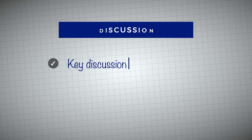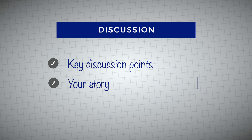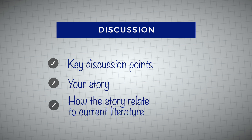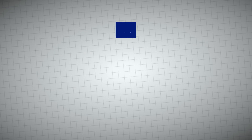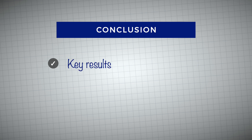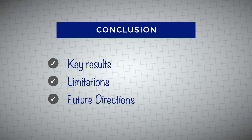For your discussion, write down the key points you want to make, what story you're telling, how that story relates to current literature, and explain the 'so what' of that story. For your conclusion, write down which results you'll pull out as key, then note the limitations and the best future directions from this research. Once you have all of this written down, your Friday session is complete.